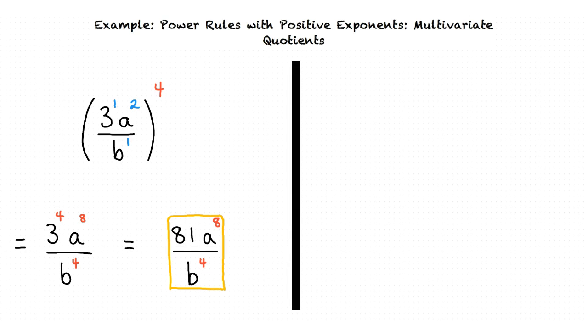Now let's take a look at our second example problem. We are given -7v over u⁴, all to the second power.